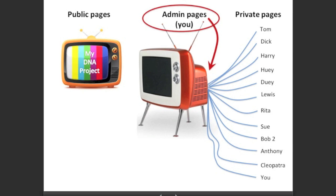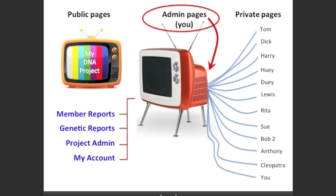Now let's take a quick look at the admin pages. There are four groups of pages: Member reports tell you how many members are in your project and give you access to each member's private page. Genetic reports give you the actual data and allow you to manipulate it. The project admin pages allow you to design the website and put group members into different projects. And 'My account' has your password and contact details.